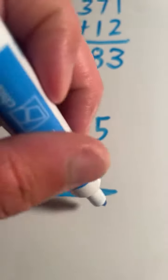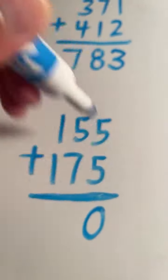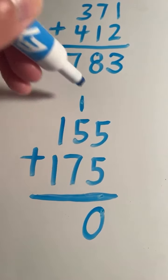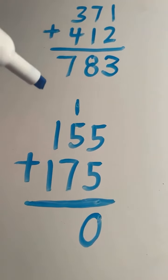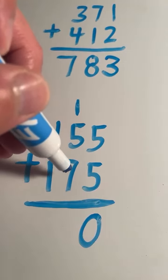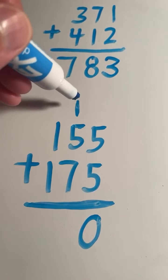So starting in the ones place, five plus five equals 10. So the zero in 10 goes in the ones place, the one in number 10 gets carried over to the tens place. Five plus seven equals 12. We can't forget to add the one that we carried over, which becomes 13. Three, carry the one.